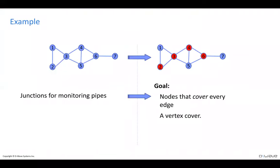First we need to identify what problem we're actually solving. We represent the junctions and pipes with a graph where each line is a pipe and each numbered circle is a junction, labeled one through seven. The goal is to find a set of nodes — junctions — that cover every edge, meaning every edge has at least one marked junction next to it. This is called the vertex cover problem, a well-known problem from graph theory.